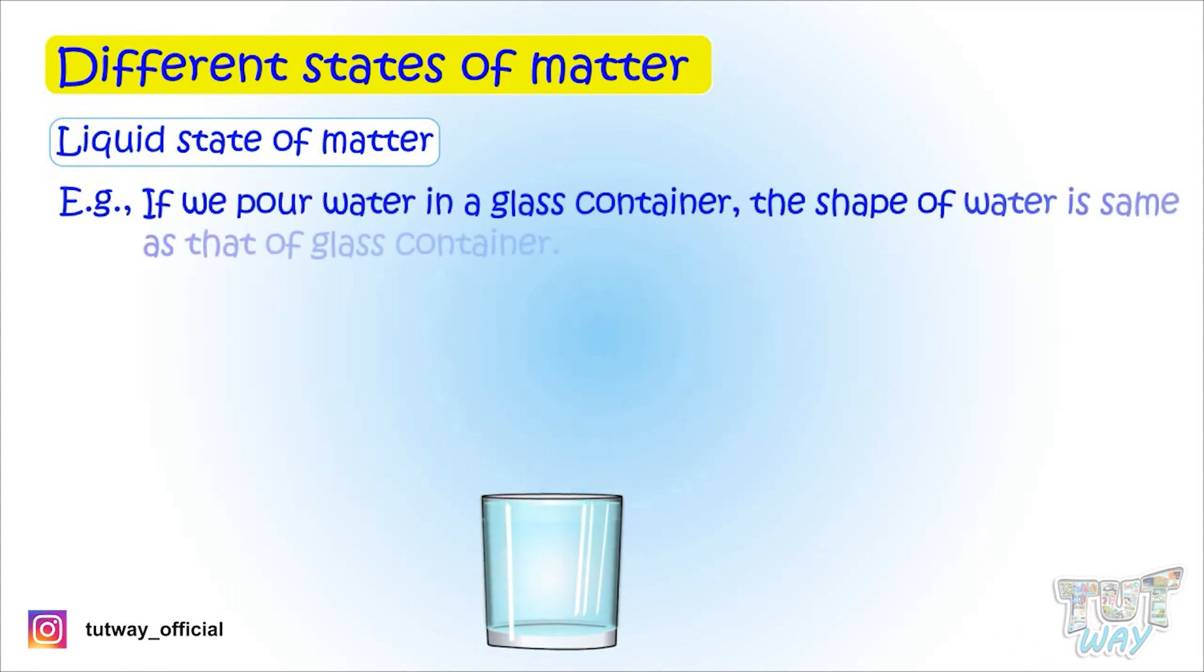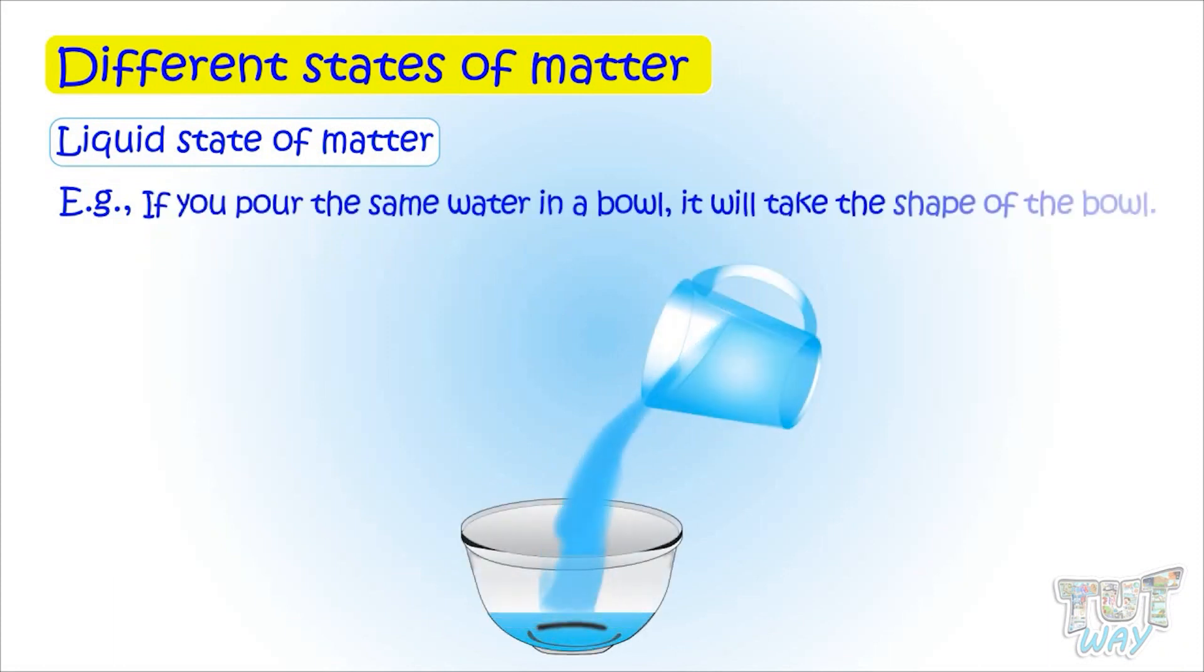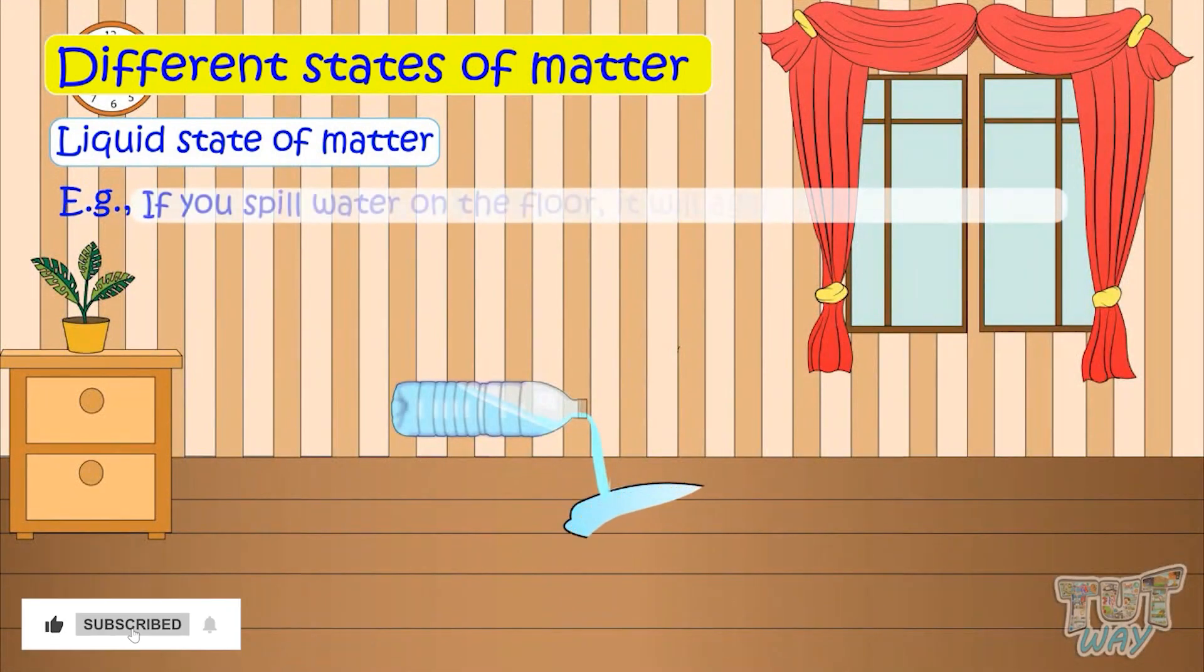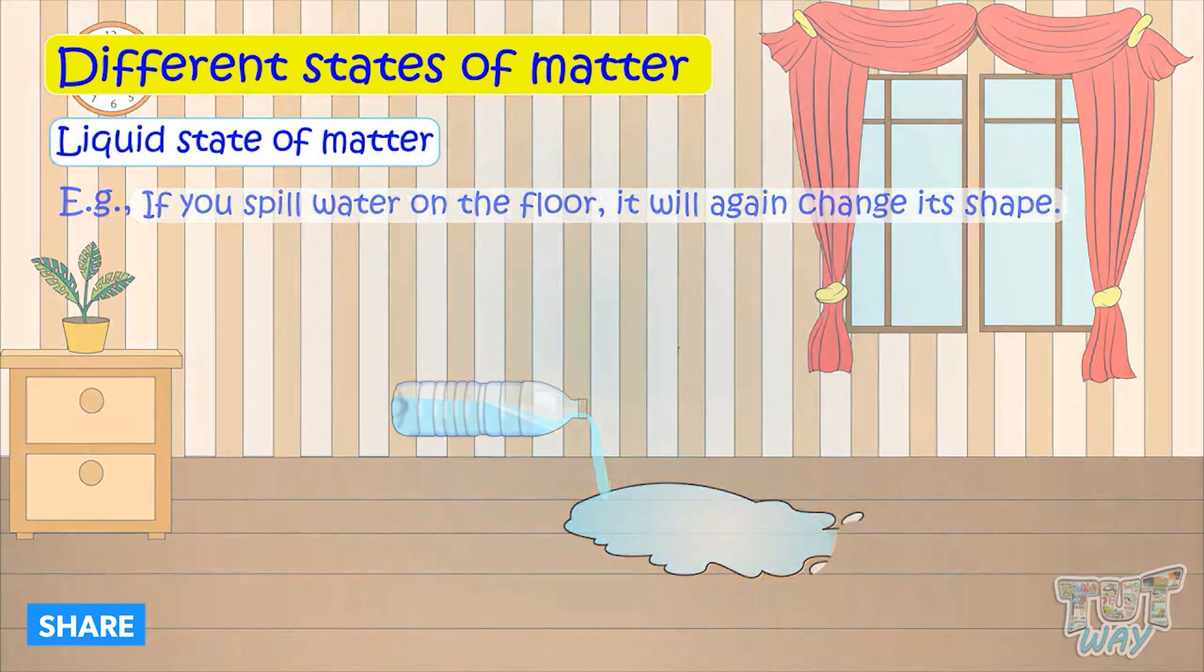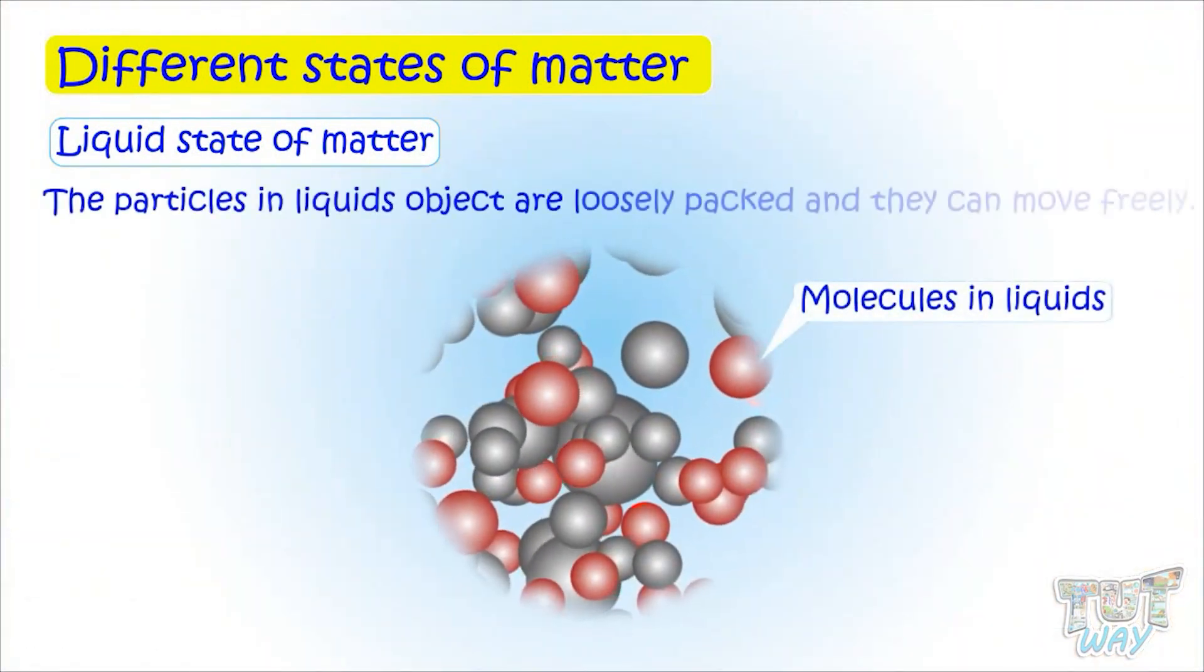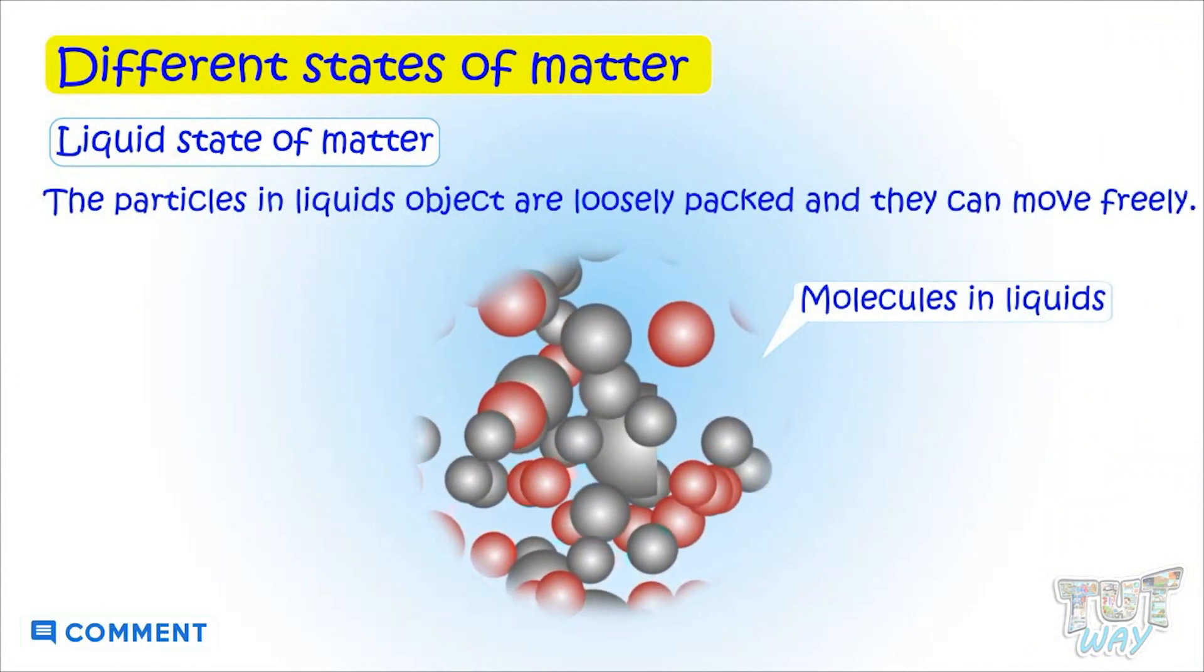If we pour water in a glass, the shape of water is the same as that of the glass. If you pour the same water in a bowl, it will take the shape of a bowl. If you spill water on the floor, it will again change its shape. This is because the particles in a liquid are loosely packed and can move freely.